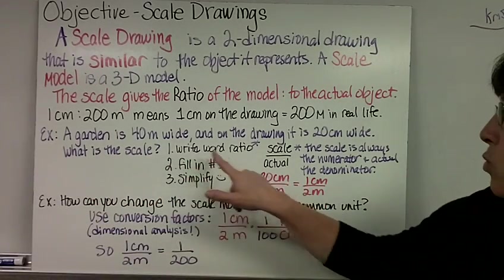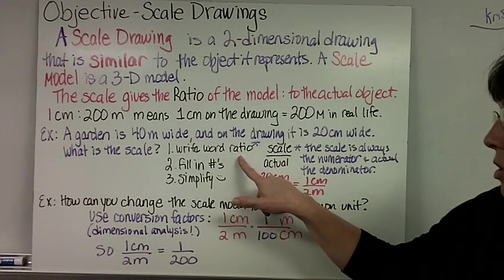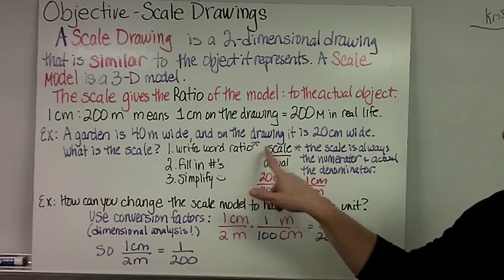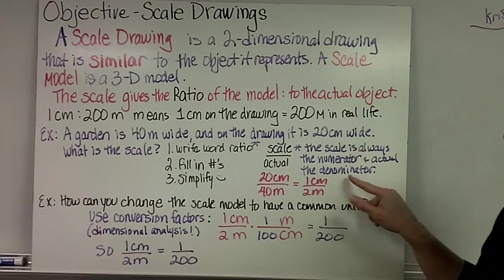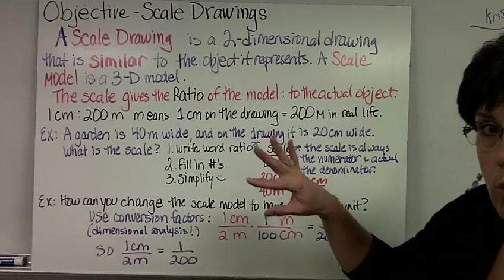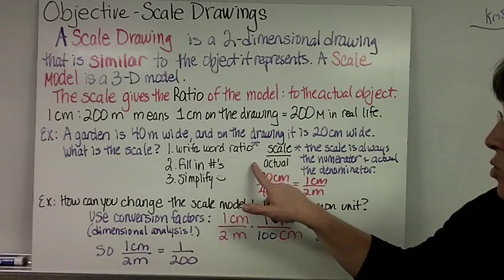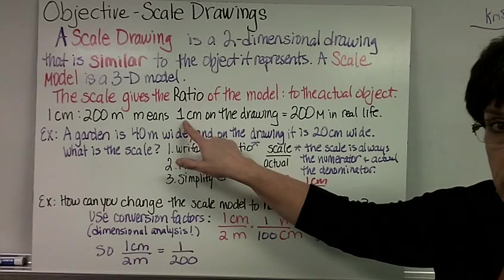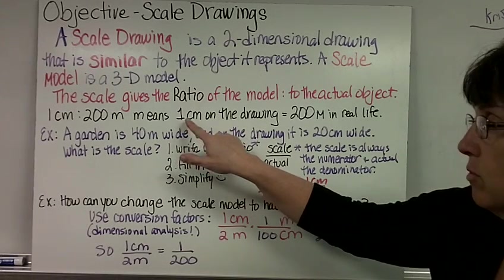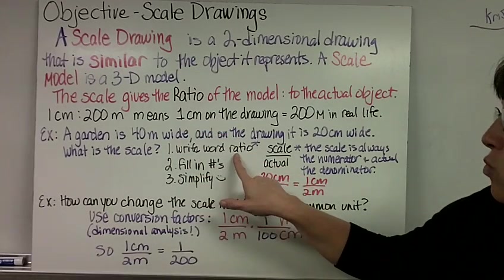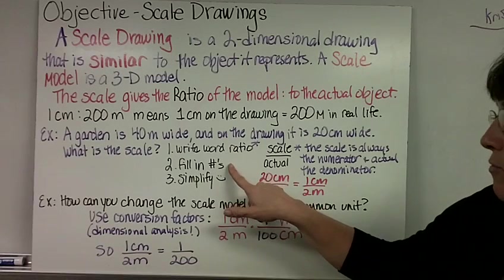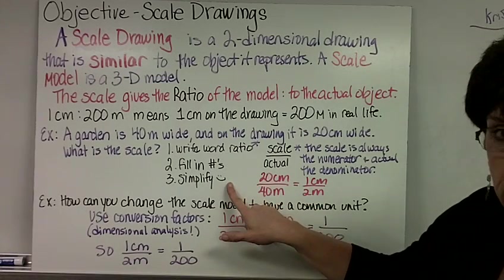These are the three steps. We write the word ratio. I put a little asterisk here because the scale is always in the numerator and the actual is always in the denominator. We always write scale over actual. You always will have the smaller number that's on the map or whatever your scale drawing is first. We write the word ratio, fill in the numbers, and then simplify.